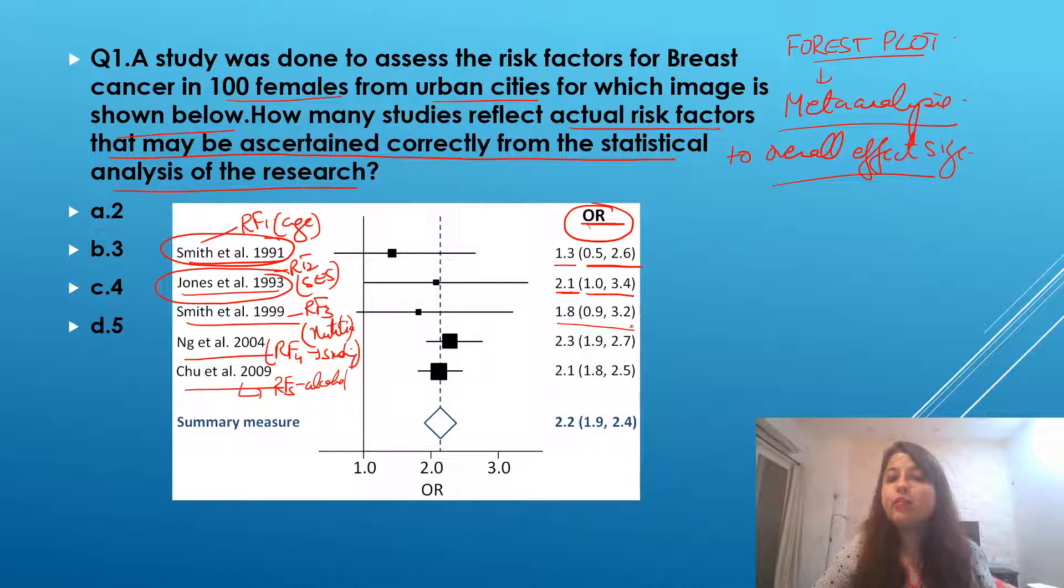For the third study, it is 1.8 and the interval is 0.9 to 3.2. Next, 2.3 with interval of 1.9 to 2.7. And lastly, 2.1 with an interval of 1.8 to 2.5. And this is an overall summary measure which is given.